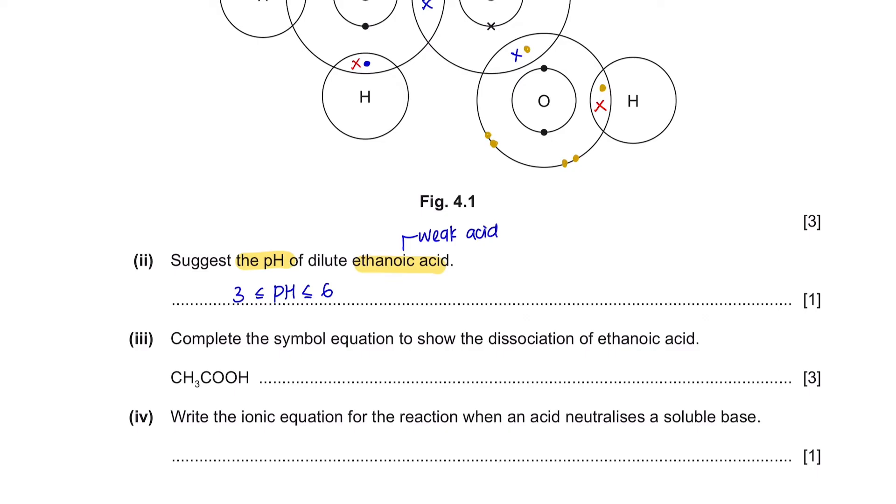Part 3: Complete the symbol equation to show the dissociation of ethanoic acid. So CH3COO is the anion and the hydrogen is the cation. When they dissociate, they would form like this. And make sure to include your reversible symbol because this reaction can happen both ways. The next step is to check whether or not they are balanced. All of them are in a ratio of 1. So that's complete and that's how you get a complete 3 marks.